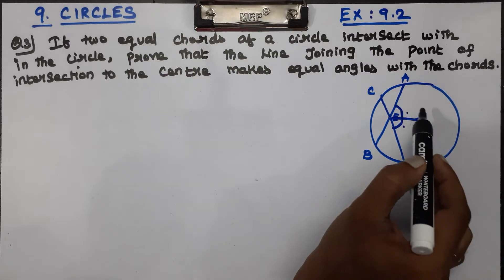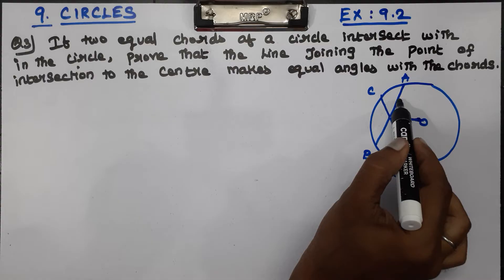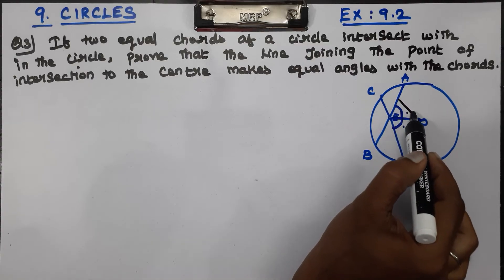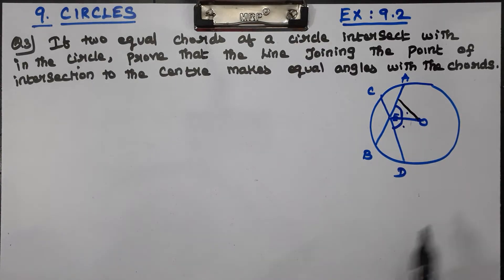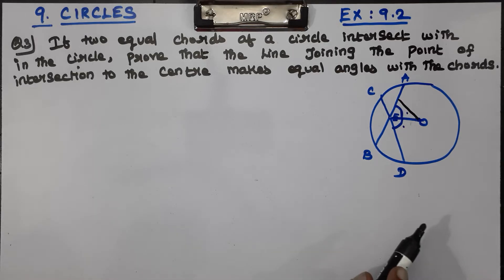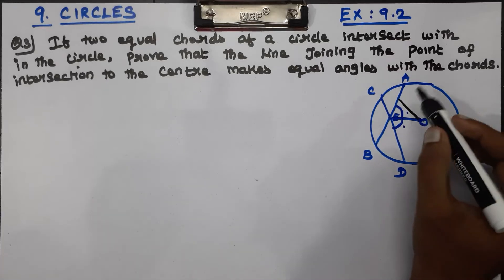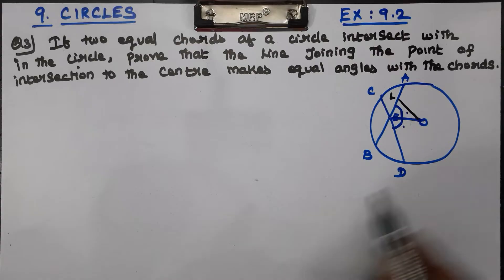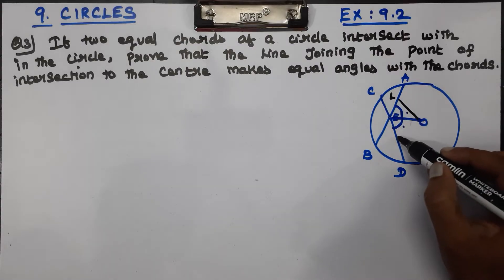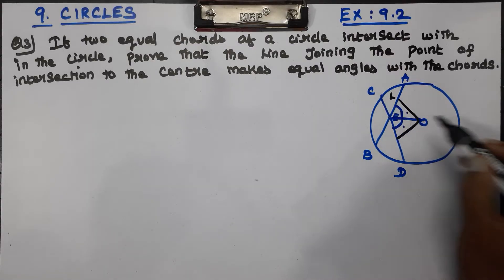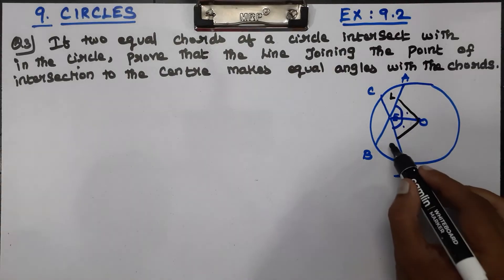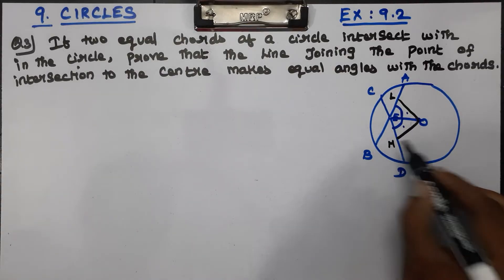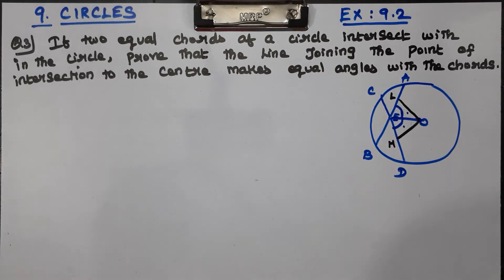We draw a perpendicular line from the center. This is our construction. If we look at the triangle, we can form a triangle. Let's take the intersection of the line and mark point M.